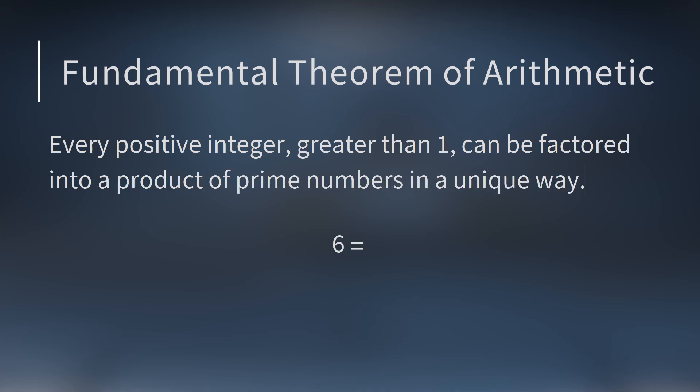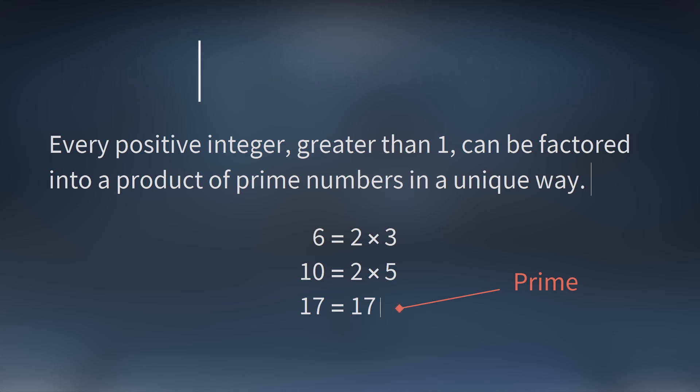For example, 6 is 2 times 3, 10 is 2 times 5, 17 is prime, so it's just 17. You can't break it up into smaller prime numbers.